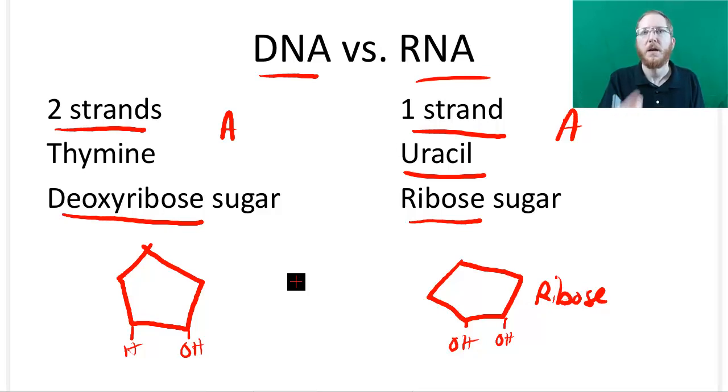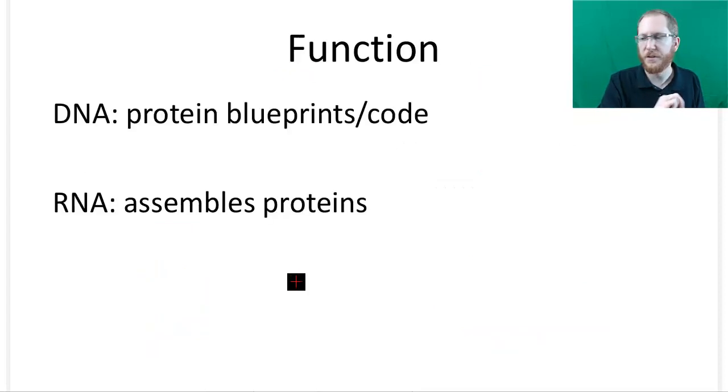So different sugar, one different nitrogen base, and different strands - one-stranded versus two-stranded. That will be our overall structural differences. And then they'll have differences in how we use them.